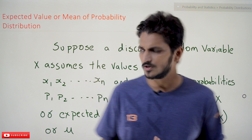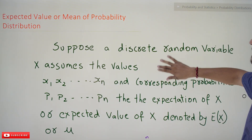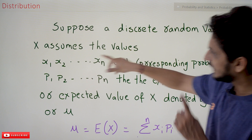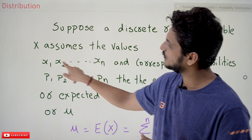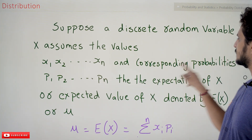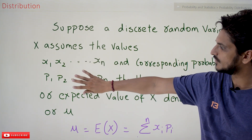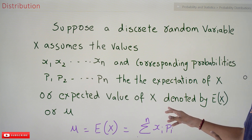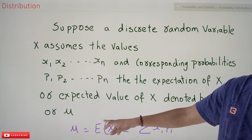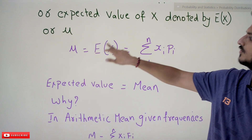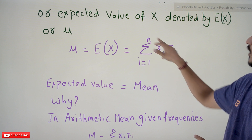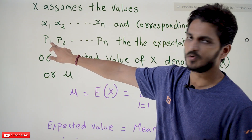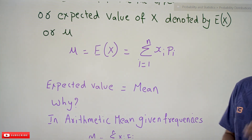Coming to today's class, first we'll understand the definition of expected value. Suppose a discrete random variable X assumes the values X₁, X₂, and so on up to Xₙ, and the corresponding probabilities are P₁, P₂, and so on up to Pₙ. Then the expectation of X, or expected value of X, is denoted by E(X) or μ, and is given as: μ = E(X) = Σ (i=1 to n) XᵢPᵢ — that is, the multiplication of each Xᵢ value and its probability Pᵢ. This is what we call the expected value.